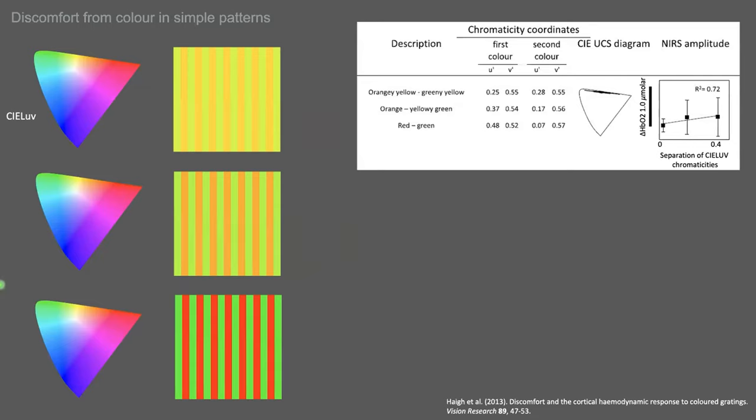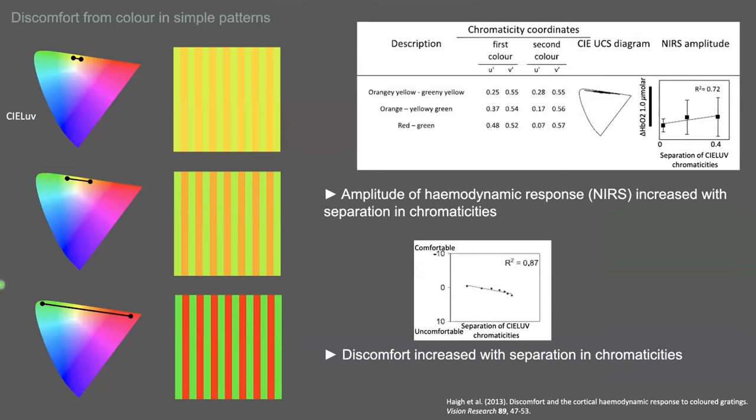Hayden Wilkins measured both metabolism and discomfort from color gratings made of two colors with different separations in chromaticity computed in the CIELAB perceptual color space. Over a large gamut of chromaticities, increasing chromaticity differences were consistently associated with increasing hemodynamic responses and increase in reported discomfort.